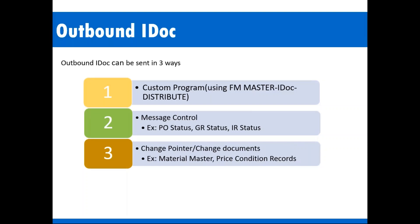Outbound IDocs can be done in mainly three ways. Today we are going to discuss the second and third methods. The first method is a custom program — directly with the program we call the data and send to a third-party system. The app team creates a program using an SAP standard program, and with customized transaction or custom functionality, we get the data and transmit it to the third-party system.